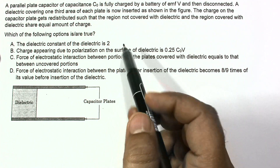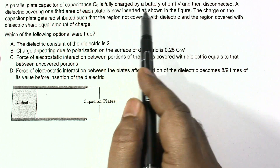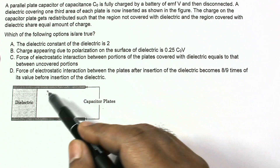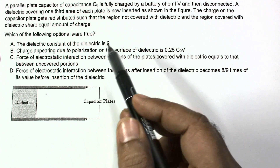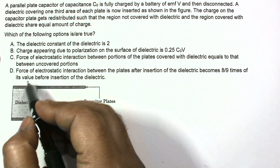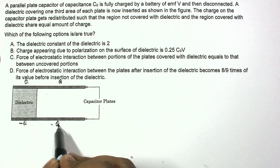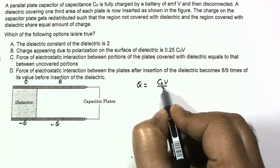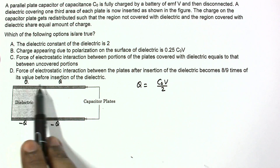Initially the capacitor plates are charged with Q = C₀V. The dielectric is then inserted. Since the charges are equal, suppose the final charge is Q and -Q, and the value of Q is C₀V/2. So C₀V/2 is distributed equally on the two sides of the plate.